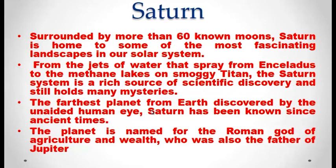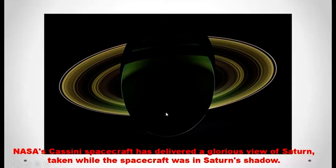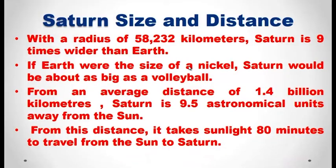The latest view of Saturn from NASA's Hubble Space Telescope captures exquisite details of the ring system. Another spectacular view was obtained by the Cassini spacecraft while in Saturn's shadow. Saturn has a radius of 58,233 kilometers — 9 times wider than Earth. If Earth were the size of a nickel, Saturn would be about as big as a volleyball. From an average distance of 1.4 billion kilometers, Saturn is 9.5 astronomical units away from the sun. Sunlight takes 80 minutes to travel to Saturn.